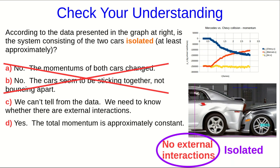Now, C is tempting because it's the only answer that actually talks about external interactions. However, I'll note that what we've been seeing is that any time there are no external interactions, it is always true that the system's total momentum is constant. In other words, one implies the other. And so we can see that this total system momentum, this yellow curve here, is roughly constant.